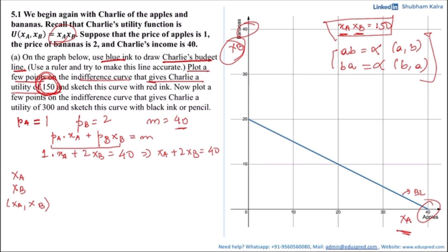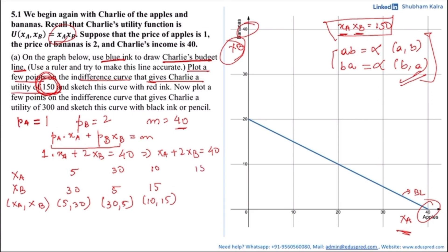The first point is (5, 30), since 5 times 30 equals 150. By the commutative property, another point is (30, 5). Another combination is 10 and 15, giving points (10, 15) and (15, 10). Let's plot these four points — (5, 30), (10, 15), (15, 10), and (30, 5) — and join them to get the indifference curve that gives Charlie the utility of 150.